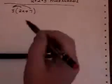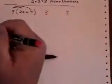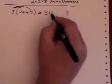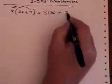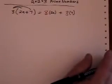So when I actually do that, let's write 3 in red twice. So 3 is multiplied by 2a and 3 is multiplied by 7.